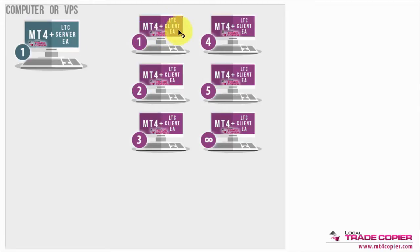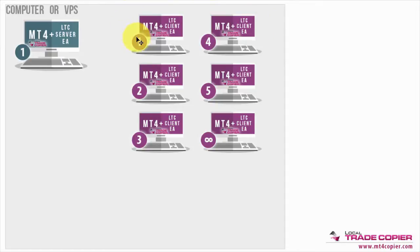The client EA is the second component of the Local Trade Copper. You run it on each MetaTrader account that you want to act as a client — to receive and repeat the trades. You can have one client, two, three, four, five — basically unlimited clients. The limit comes from your computer and how many MetaTrader platforms it can run.